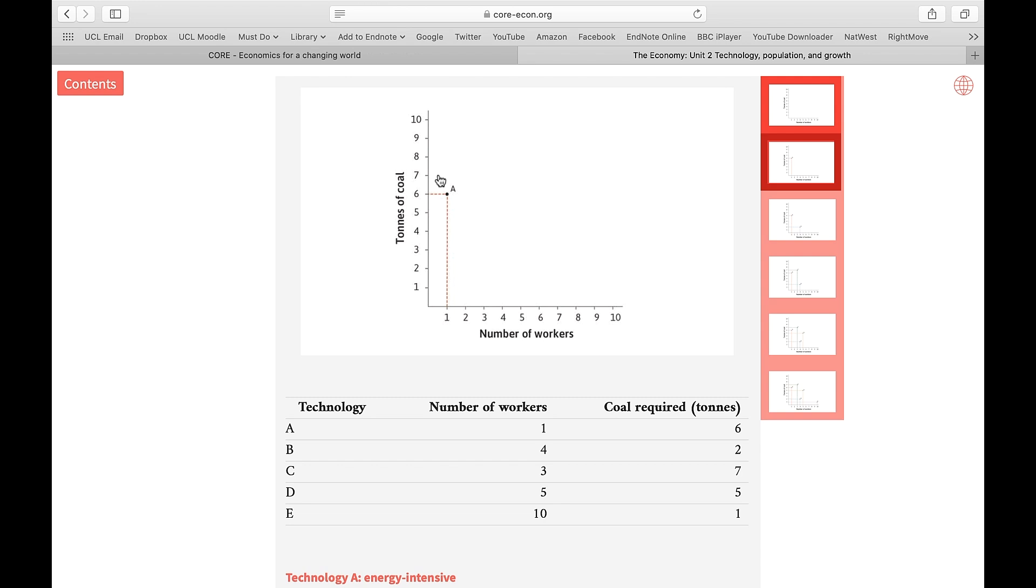Technology A, the factory that I just showed you. Here, for producing 100 meters of cloth, we need six units, six tons of coal, and only one worker. We call this an energy-intensive technology. An energy-intensive way of producing 100 meters of cloth.